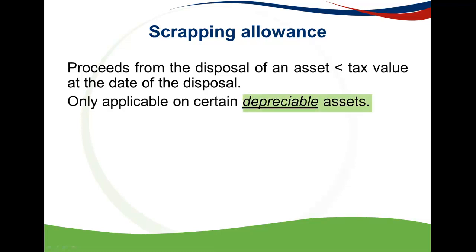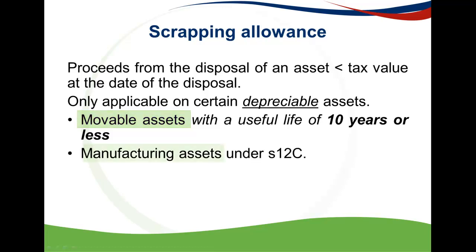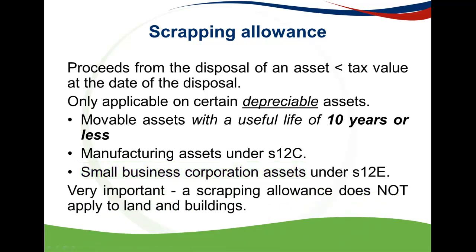A scrapping allowance is only applicable on certain depreciable assets: movable assets with a useful life of less than 10 years, manufacturing assets written off under section 12C (the manufacturing asset allowance), and small business corporation assets written off under section 12E. It's very important to note that the scrapping allowance does not apply to land and buildings — it's only applicable on depreciable movable assets.